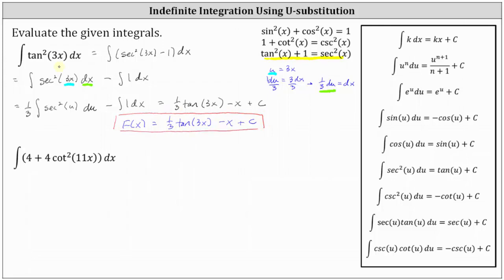Let's identify this as big F of x. F of x is equal to one third times the tangent of 3x minus x plus c, which is the family of functions whose derivative is equal to the given integrand function of tan squared 3x. To verify, we'd have to find the derivative and then perform another substitution using the Pythagorean identity.